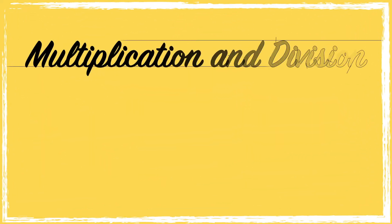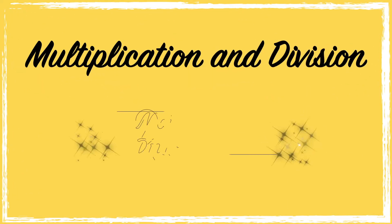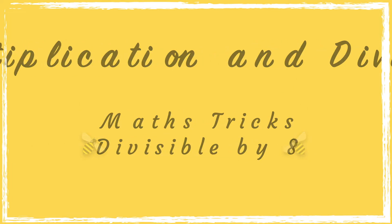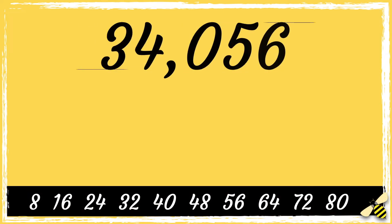In this video we're going to learn a quick trick to find out if a number can be equally divided by eight. Here is the number 34,056. A number will be divisible by eight if the last three digits are divisible by eight.